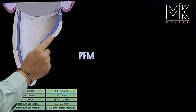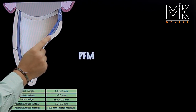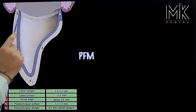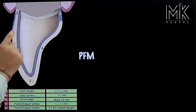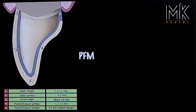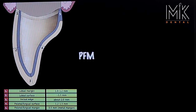The buccal margin of the PFM preparation is a modified shoulder while the palatal aspect is a deep chamfer. You have a metal coping layered with ceramic on the buccal, and only a palatal metal collar. At the margin, the metal coping is layered with an opaque, then the dentin ceramic, enamel ceramic, and finally the glaze layer. A definite thickness must be prepared so the technician can provide a prosthesis that merges with the preparation margin. This reads 1 to 1.2 millimeters at the buccal margin.